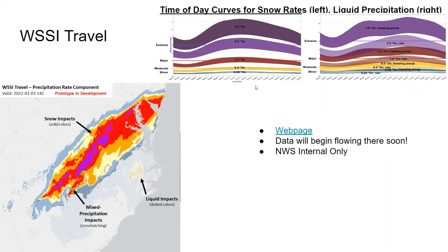On the top right portion, we have examples of what the time of day curves are looking like — snow on the left and liquid precipitation on the right. The liquid precipitation includes two separate time of day curves based on whether the HERD model is identifying freezing precipitation versus liquid rain precipitation. Looking at the snow curves, during the midday hours, two inches per hour of snow is roughly going to correspond to extreme impacts if other weather conditions are also adverse — for example, if there is snow on the road and visibility is decreased, which you would typically expect for two-inches-per-hour snowfall.